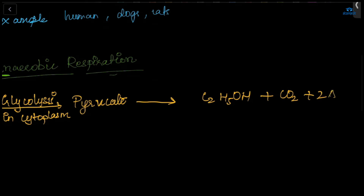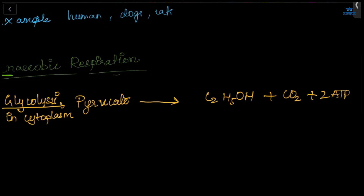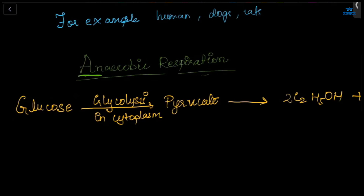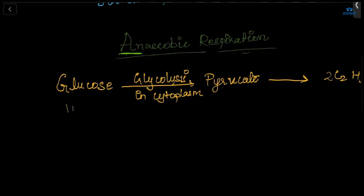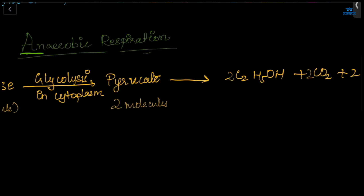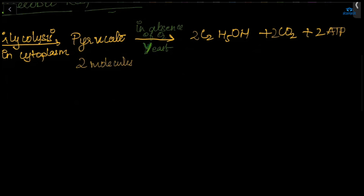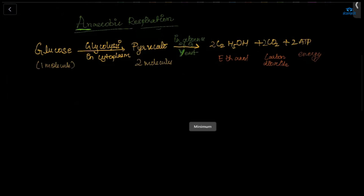In anaerobic respiration, two molecules of ATP are produced. From one molecule of glucose, two molecules of pyruvate are formed, yielding two molecules each of ethanol and carbon dioxide. This process occurs in yeast in the absence of oxygen.